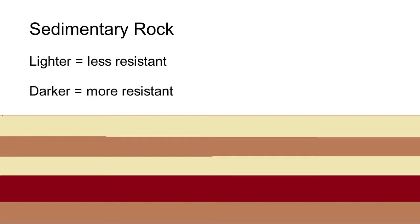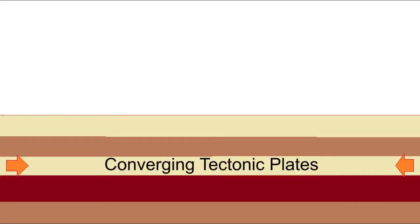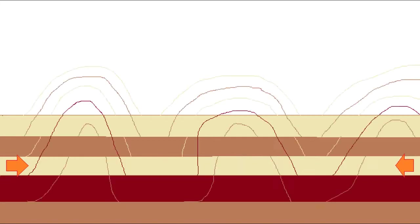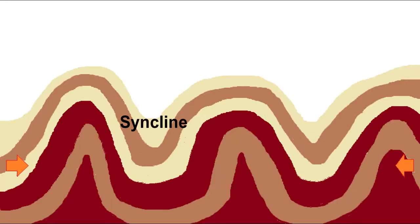We start with some sedimentary rock. We have lighter and darker rock showing more and less resistant layers. With converging tectonic plates, we have a massive amount of pressure pushing in from the sides.